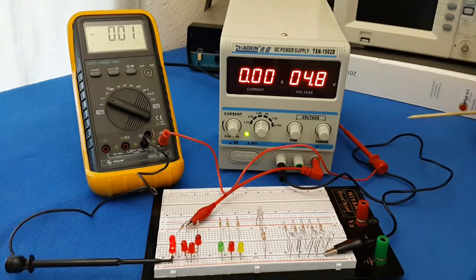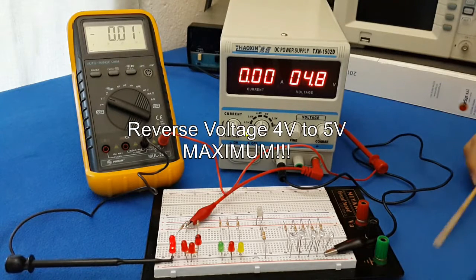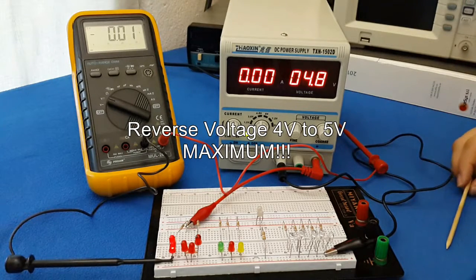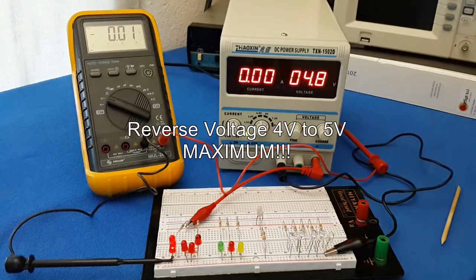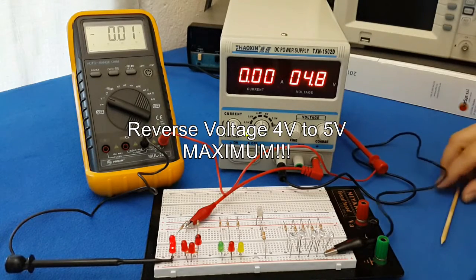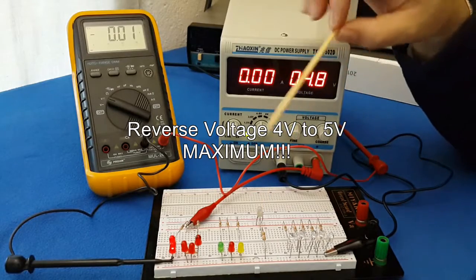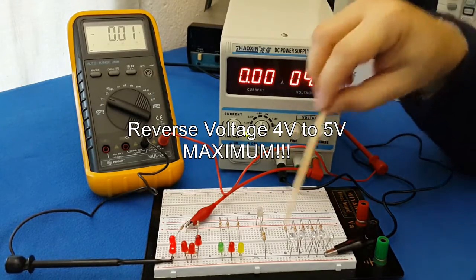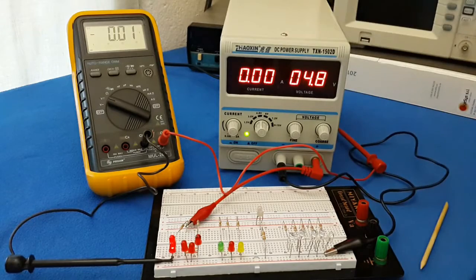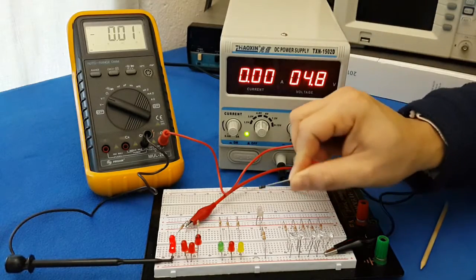Most LED diodes, they have reverse voltage very low, 4 to 5 volts some of them. So, if you are going to use them in a power supply that is changing the polarity like AC or something like that, don't use them as a rectifier. You must put a regular rectifier on it, a silicon diode.